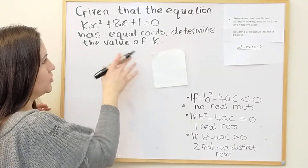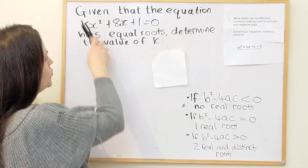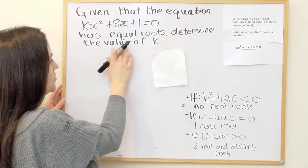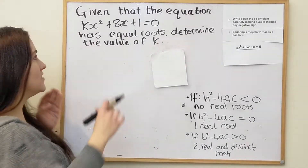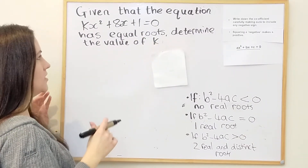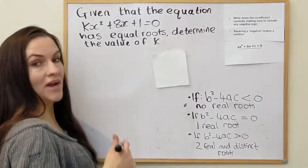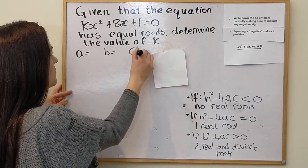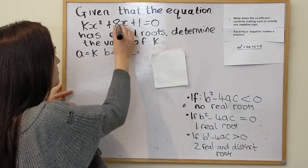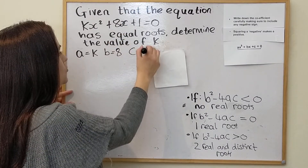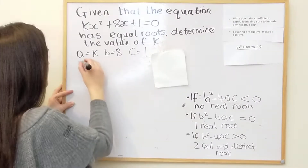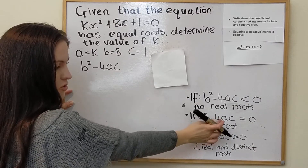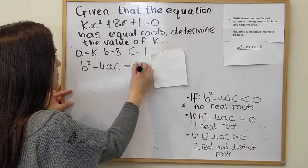Now something slightly different: given the equation kx squared plus 8x plus 1 equals zero has two equal roots, determine the value of k. This time we're working the other way — instead of finding the nature of the roots, we're told the type and working backwards to find k. We write down a is k, b is 8, and c is 1. Since it has equal roots (one real root), we set b squared minus 4ac equal to zero.